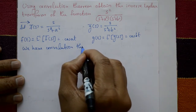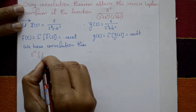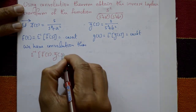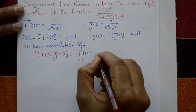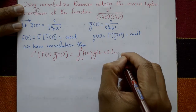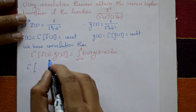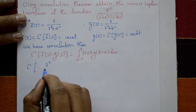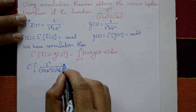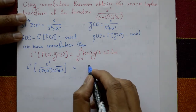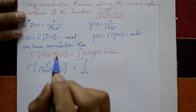By the convolution theorem, the inverse of F̄(s)·Ḡ(s) equals the integral from u=0 to t of f(u)·g(t−u) du. So the inverse of s²/[(s²+a²)(s²+b²)], which is F̄(s)·Ḡ(s), equals the integral from u=0 to t of f(u)·g(t−u) du.